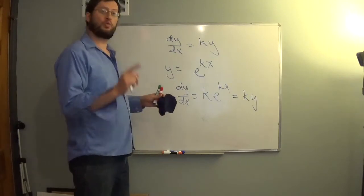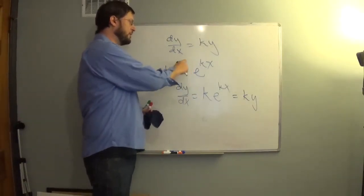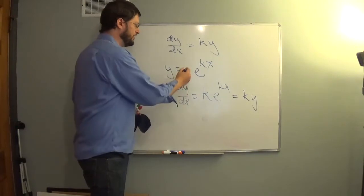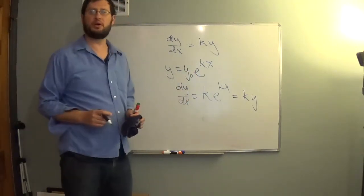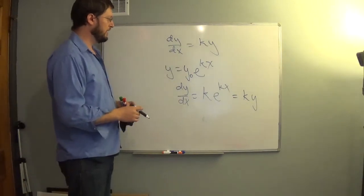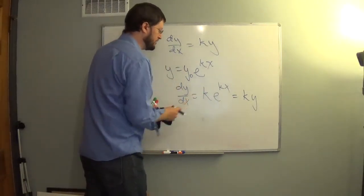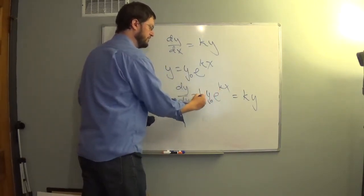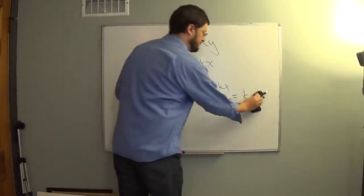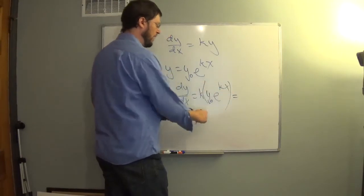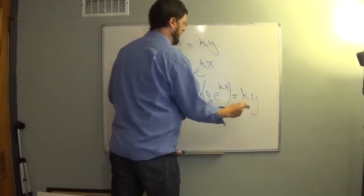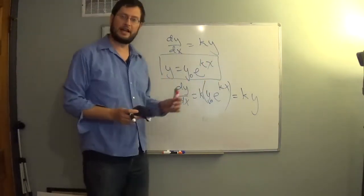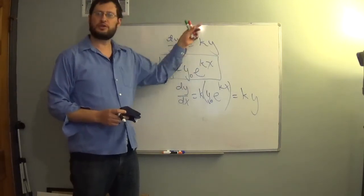We can add one other thing here too. If this had some other constant out front — which we'll call y sub zero — then this would still work. That y₀ still follows along; the k still comes down as the derivative of the exponent, and that's still k times y. Later, when we talk about differential equations, we'll be able to discover that that is, in fact, the full solution to this differential equation.